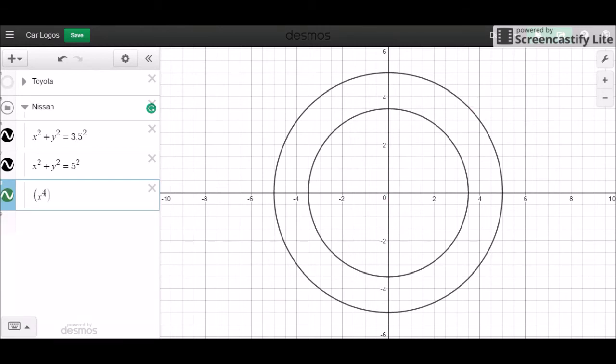I want to use x to the fourth, plus y to the fourth, equal to one. We might make the degree higher to make it more rectangular. For now, these numbers should work.